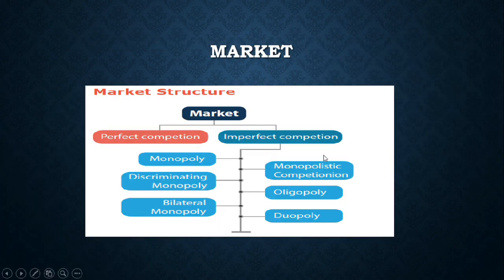The market is classified into perfect market and imperfect market. Imperfect market types include Monopoly, Discriminated Monopoly, Bilateral Monopoly, Monopsony, Oligopoly, and Duopoly.